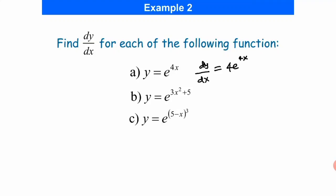And for question B, our dy/dx is: we have to differentiate the power first, so we obtain 6x, and then we just copy back the question. So we have 6x·e to the power of 3x squared plus 5.